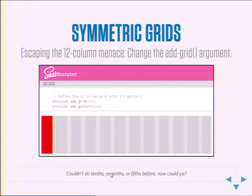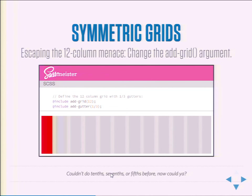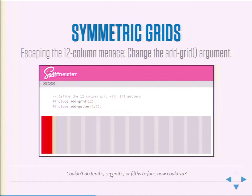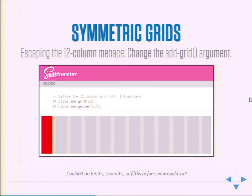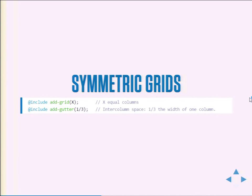The `add-grid` global configuration directive just takes an integer — you specify the number of columns you want. It can be 12 or any other number, which makes getting out of the 12-column grid really easy. You can do a 10-column grid or a 5 or whatever you need for your content. `add-gutter` takes a fraction or decimal; it's a multiplier for the width of a column, and that multiplier value becomes your gutter space between columns.